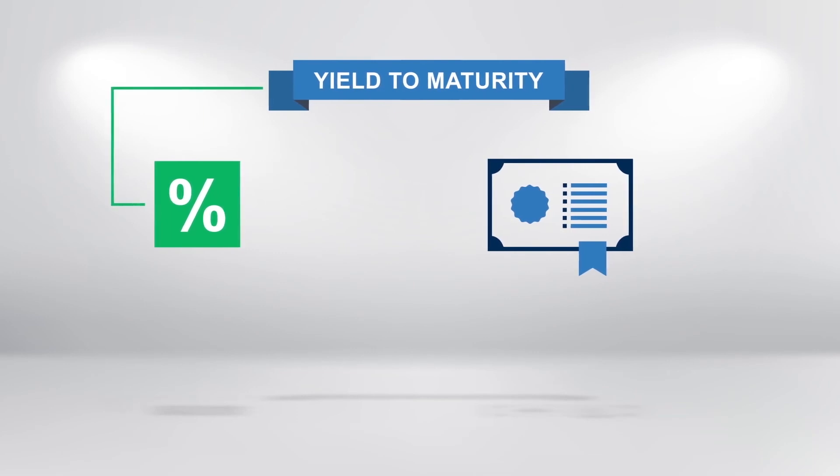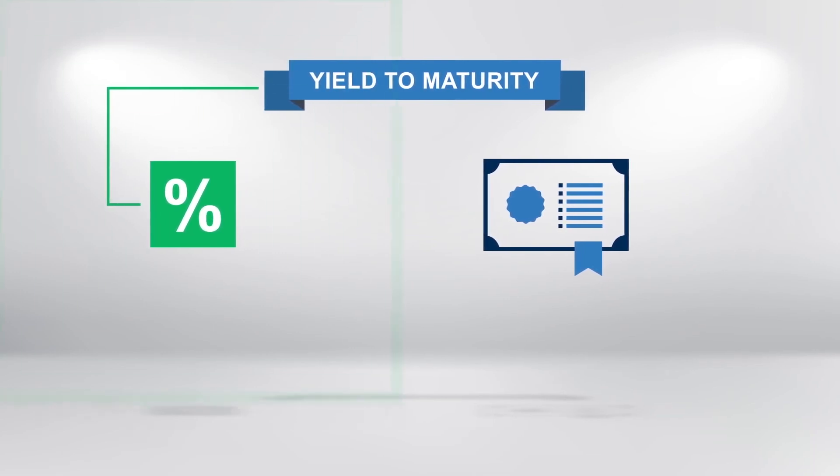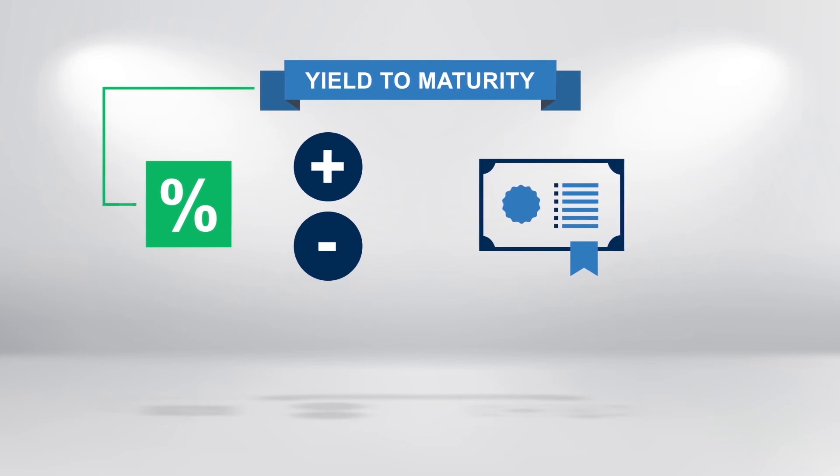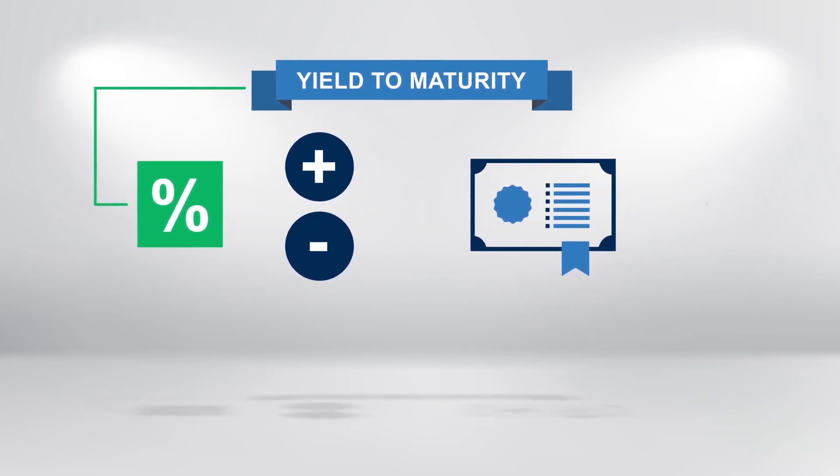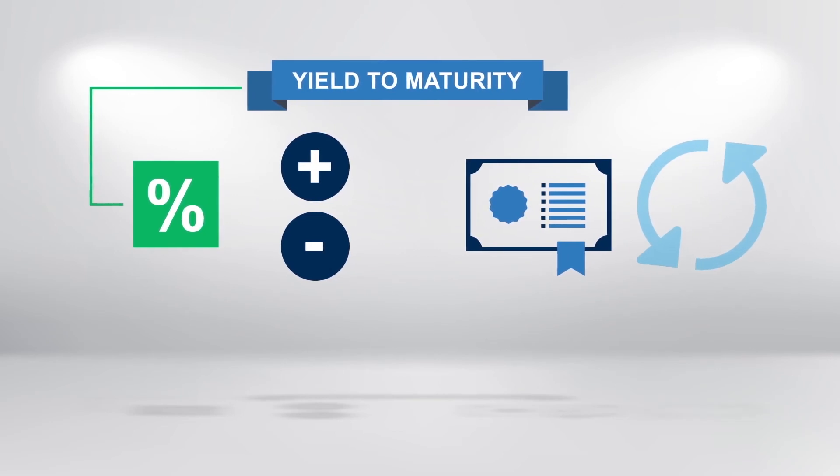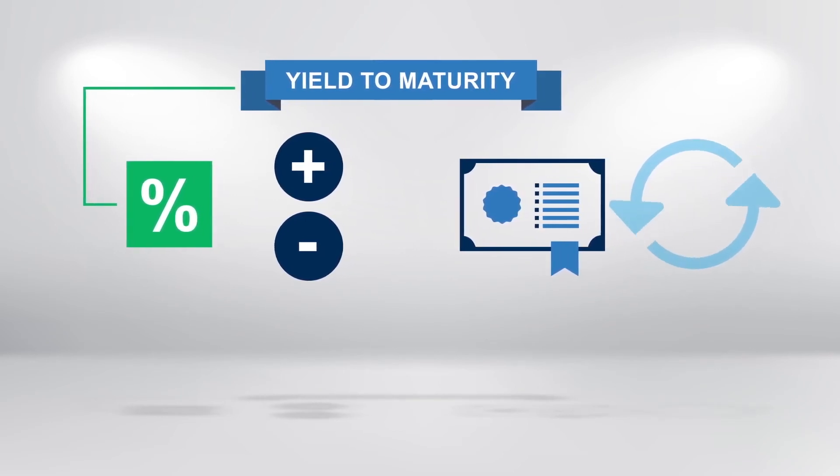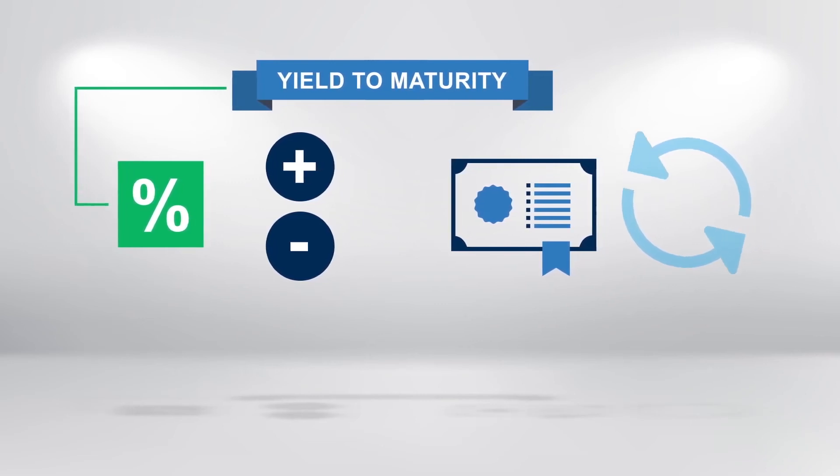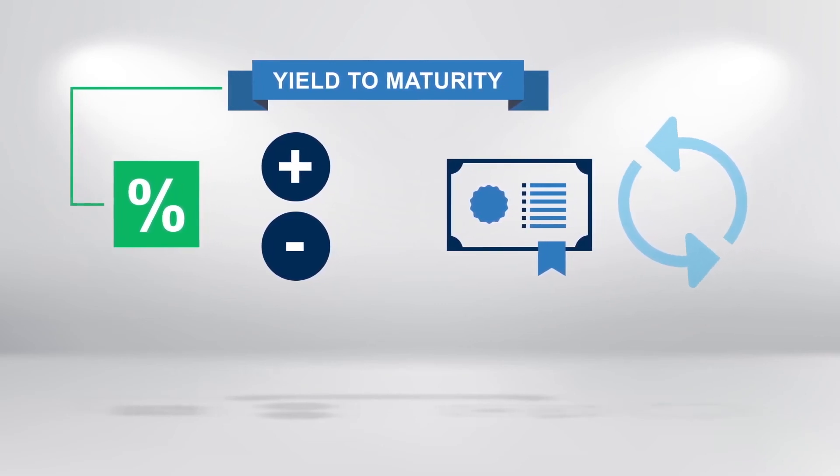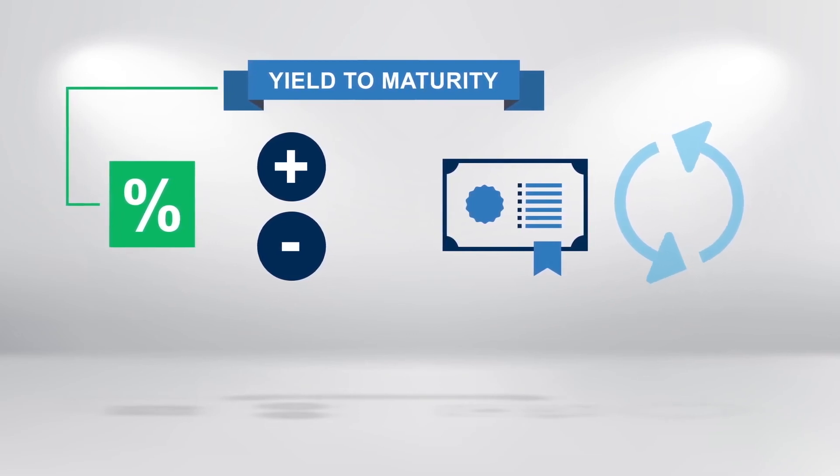The yield to maturity equals all the interest payments the investor will receive plus any gain or loss between the price the bond was bought at and the repayment price, which is usually 100. The formula assumes that the investor will reinvest future coupon payments at the same rate as the current yield on the bond.